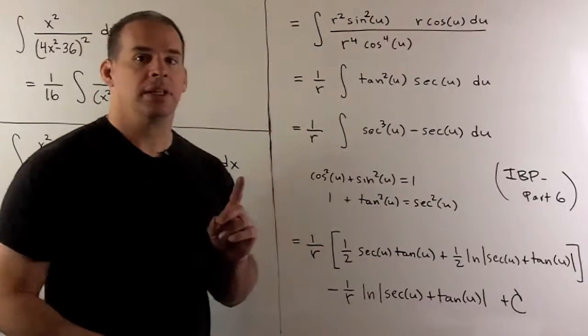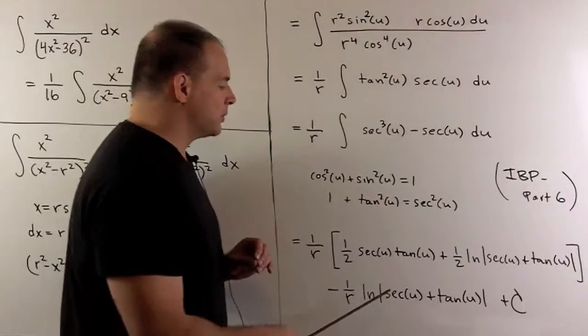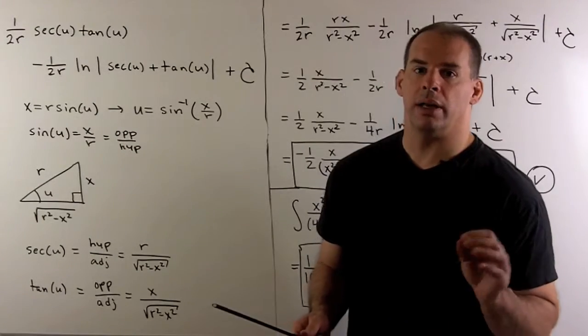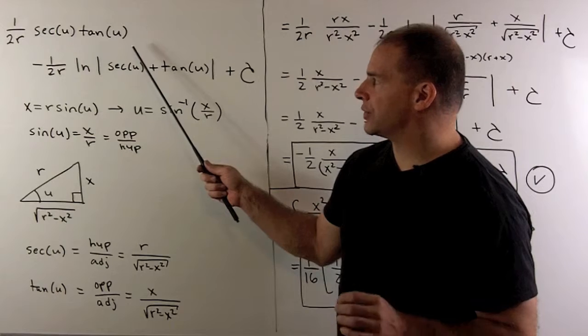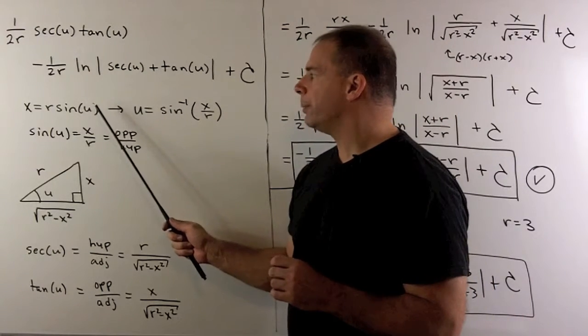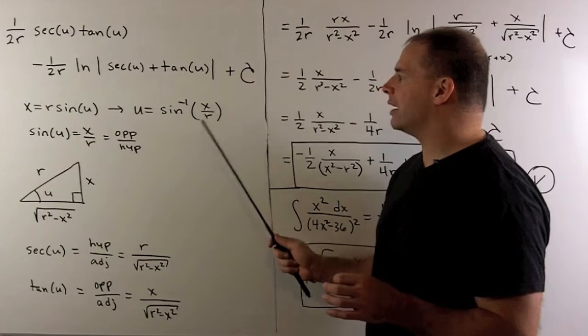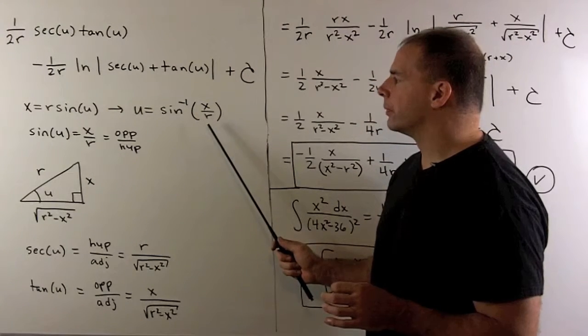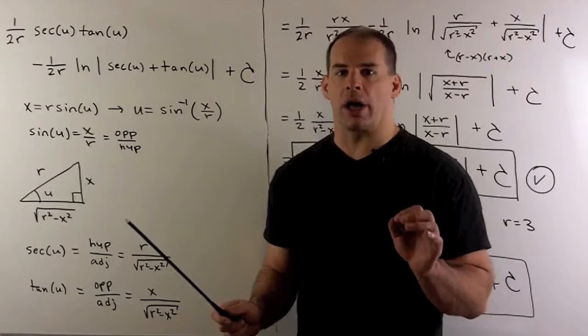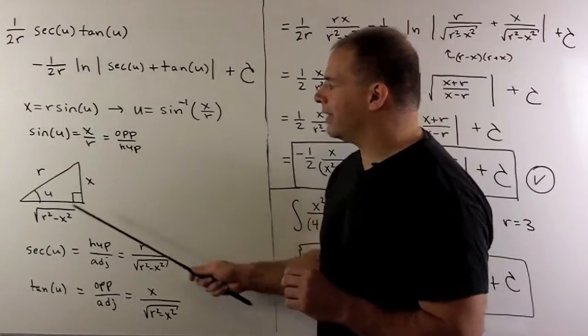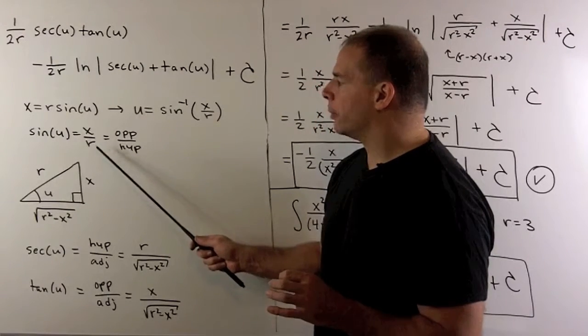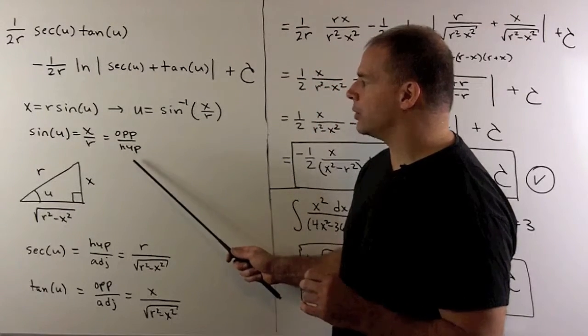So, what's left? We just have to substitute out the u to get something in terms of x. Now, our expression collapses to two terms. We have x is equal to r sine of u, or u equals the inverse sine of x over r. To get our secant tangent, I'm going to work with a right triangle. So, I'm going to fill in the angle u. Then, sine of u, which is equal to x over r, you can think of as being opposite over hypotenuse.